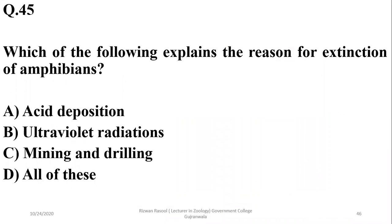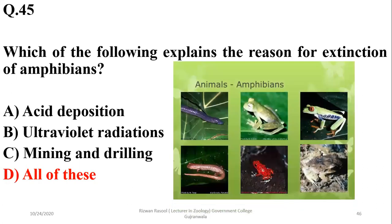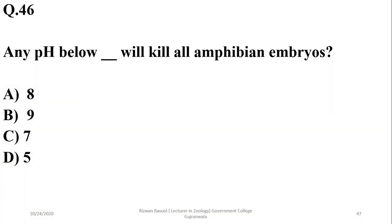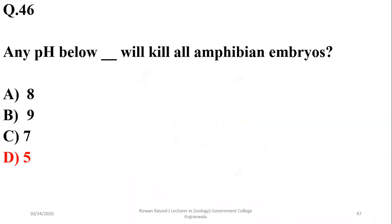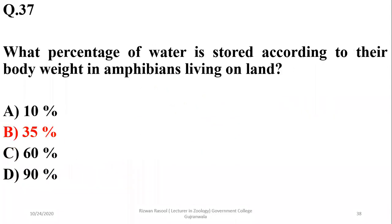Which of the following explains the reason for extinction of amphibians? All of these are causes: acid deposition, ultraviolet radiation, mining, and drilling activities. Any pH below 5 can kill all amphibian embryos — that is the lethal pH range; below 5, embryos will not survive. That was all about amphibians.